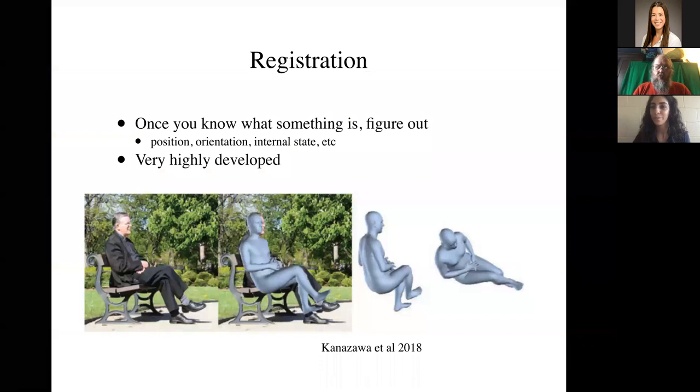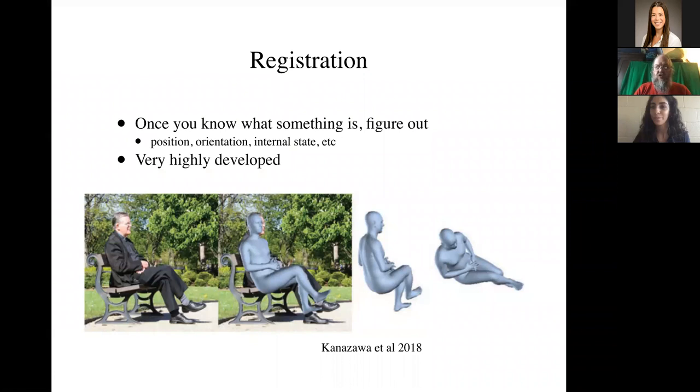When you know what something is in an image, you can then also figure out its position, orientation, and internal state. This area is very highly developed. So I'm showing you an example from Angju Kanazawa and colleagues. You can see there's a person sitting on the bench. The procedure is not only going to detect the person, but it's also going to adjust the structure of a model of a person so that it lines up with the detected person and it's going to report the 3D structure of the person. Now you'll notice that the reports aren't super accurate, as in it hasn't quite got his feet right, his head is a bit bigger and tilted forward and the like, but basically we know where the person is.